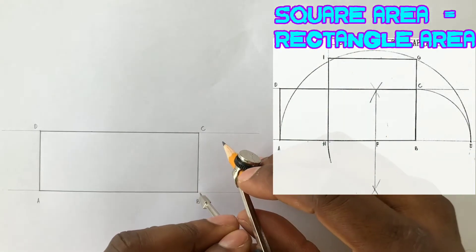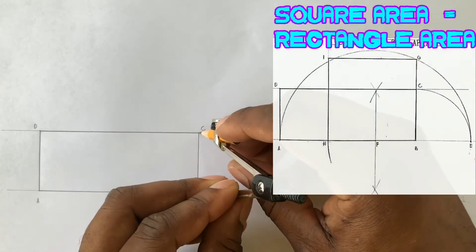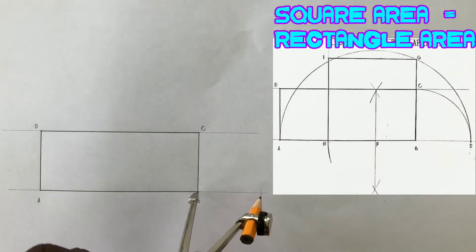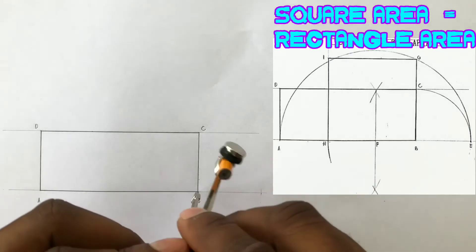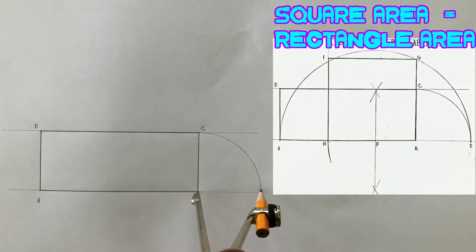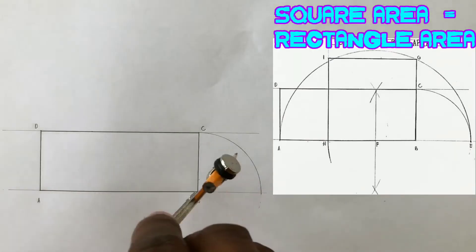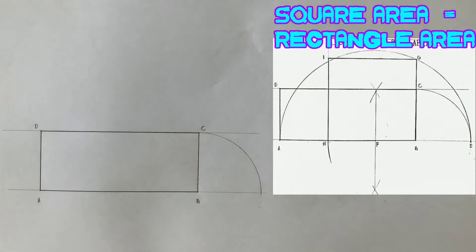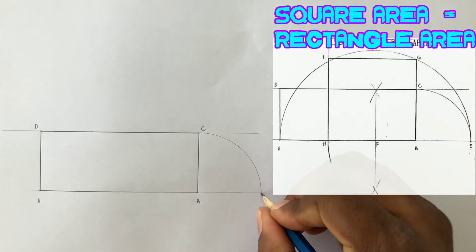Now open your compass to a radius of BC and using B as center, scribe an arc from C to touch the extension of the AB line. This will give us point E. Label this point E.